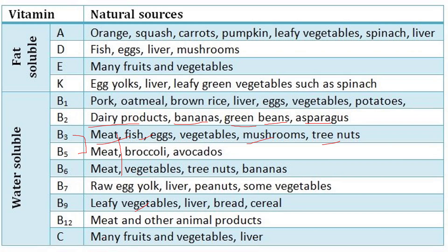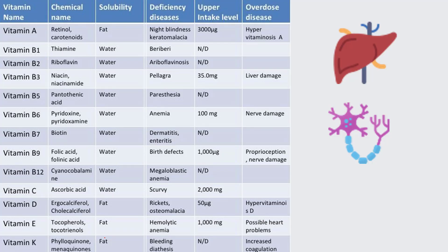Now we will discuss about the diseases caused by the deficiency of vitamins — you need to remember this. Vitamin A deficiency causes night blindness. The chemical name of vitamin A is retinol or carotenoids. The chemical name will also be asked in examinations — I have seen many previous papers of SSE examination where they ask about the chemical name of vitamin B7 and vitamin A.